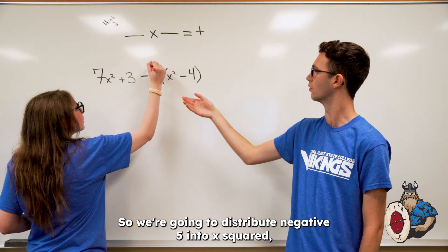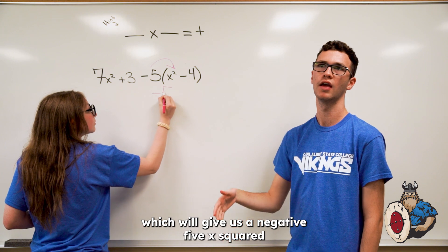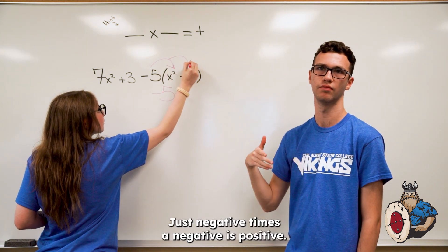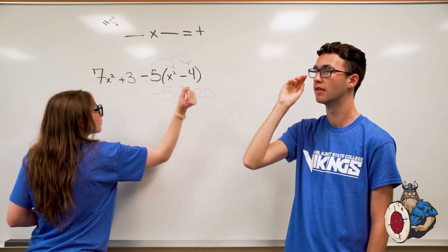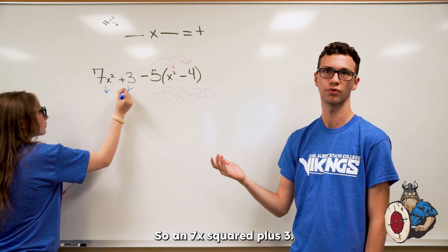So, we're going to distribute negative 5 into x squared, which will give us negative 5x squared. And negative 5 to negative 4, which will give us a positive 20, because negative times a negative is a positive. Then, we're going to bring down our other two numbers. So, 7x squared plus 3.